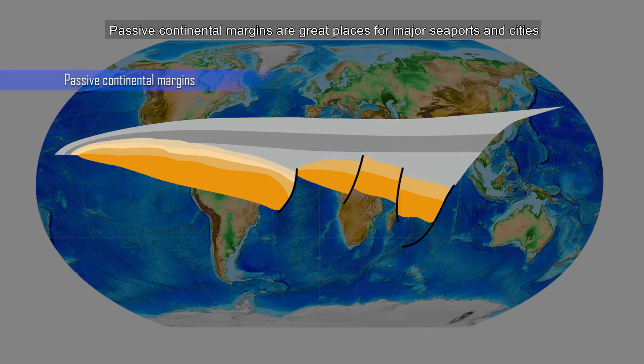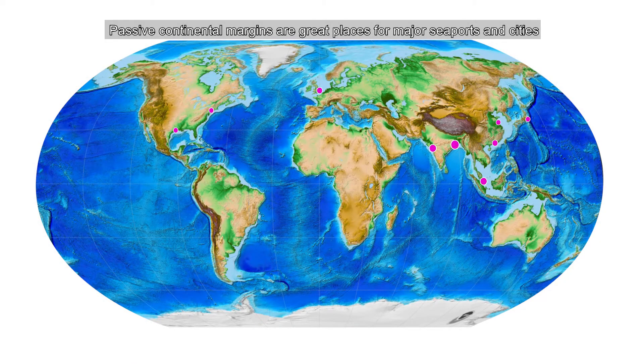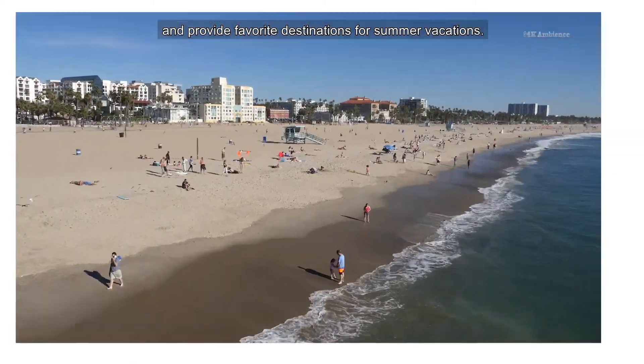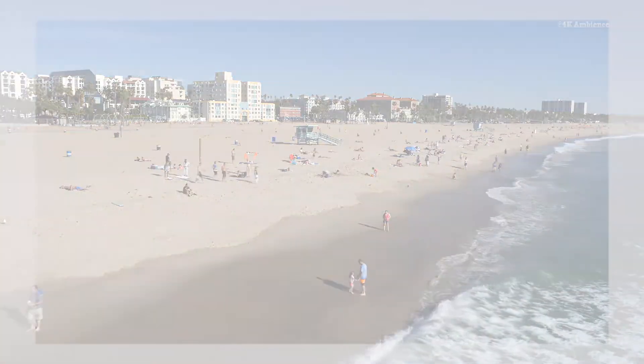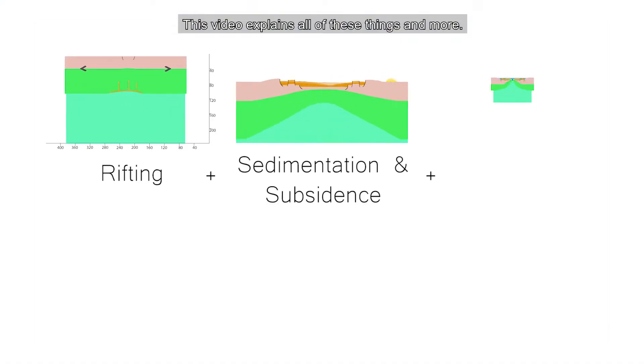Passive continental margins are great places for major seaports and cities and provide favorite destinations for summer vacations. This video explains all of these things and more.